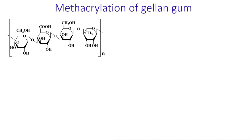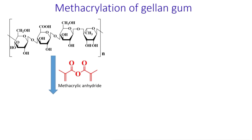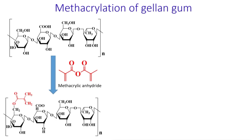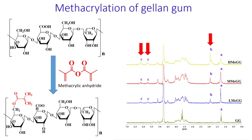reaction with methacrylic anhydride, which resulted in methacrylated derivatives. Three different methacrylated derivatives were synthesized with low, medium, and high degrees of methacrylation. The success of the synthesis and the degrees of methacrylation were confirmed using proton NMR spectroscopy. The NMR spectra showed the appearance of new peaks belonging to methacrylate groups.